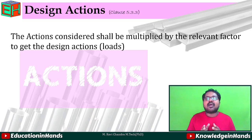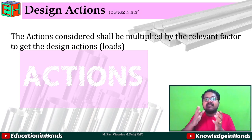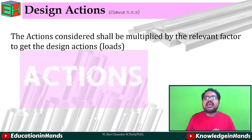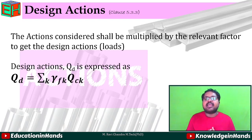As per clause 5.3.3.3, actions considered shall be multiplied by the relevant factor to get the design actions. In limit state method, loads are multiplied by certain factors to get the design load, and strengths are divided by certain factors to get the design strength. The formula for design action is: Qd = Σ(γfk × Qck), where Qck is the characteristic action for load k.